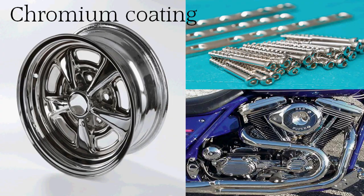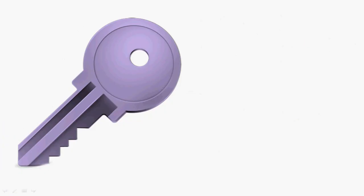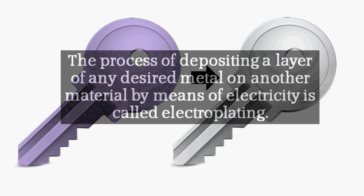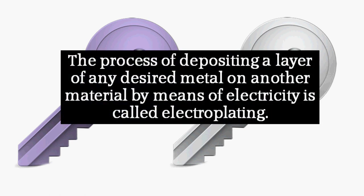Here we have an iron key. If we coat it with other metals like copper, nickel, etc. that don't get rust, we can use the key for a long time. The process of depositing a layer of any desired metal on another material by means of electricity is called electroplating. Let's do it ourselves!